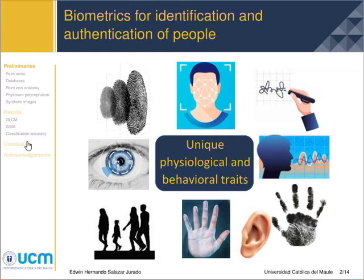The identification of people through biometrics is based on the automatic recognition of the individual's true physical or behavioral traits, which must meet certain characteristics. They must be unique to each person, permanent, and universal. There are several biometric traits.